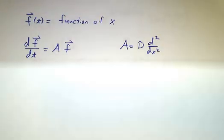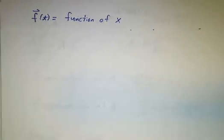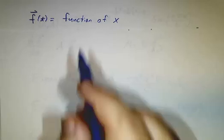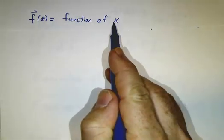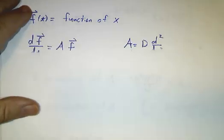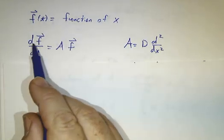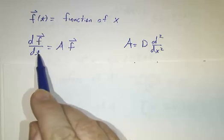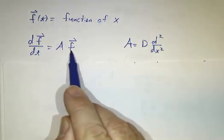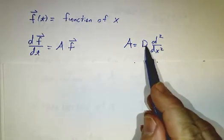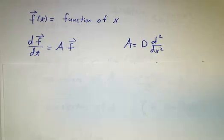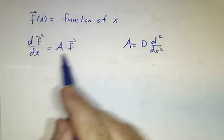We're going to do it using the second perspective where we think of f at any given time as a function of x. So we don't think of f as a function of x and t. We think of it as a function of x that evolves in time. So from that perspective, we have that the derivative of the function with respect to time is an operator acting on that function. And that operator is this constant d times the second derivative. And we want to solve equations like this.